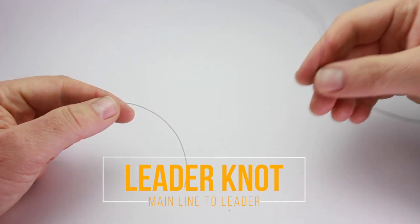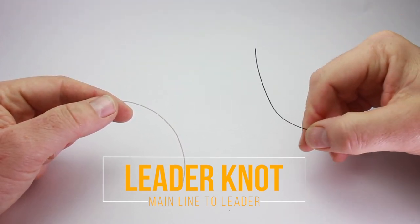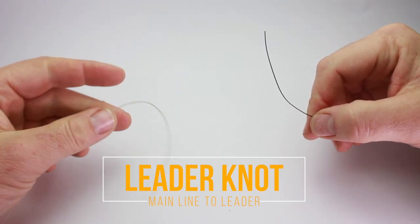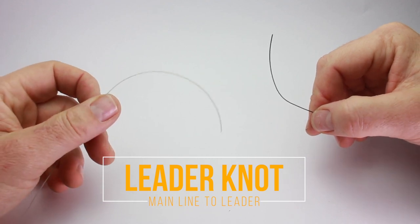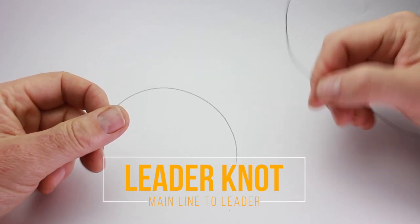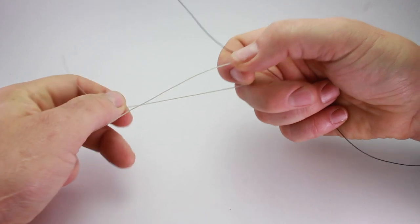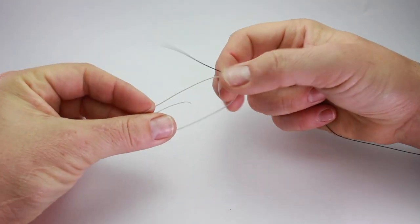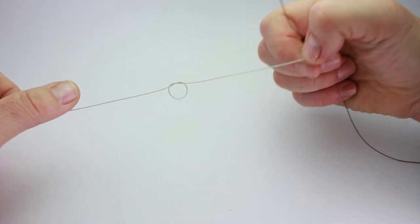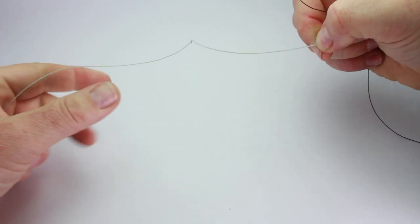We're going to tie the leader knot onto this 20 pound line in my right hand and the leader line in my left hand will be about 60 pounds. The first thing I do is tie an overhand knot in the thicker leader line like that.